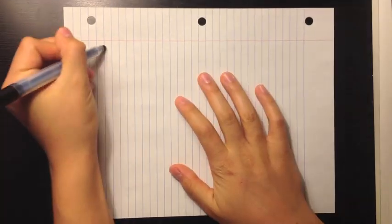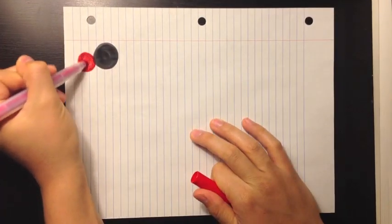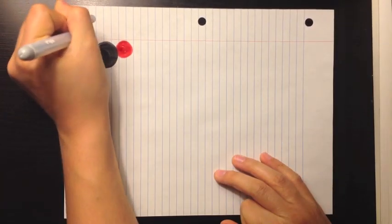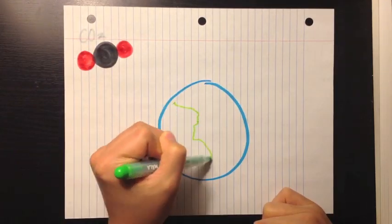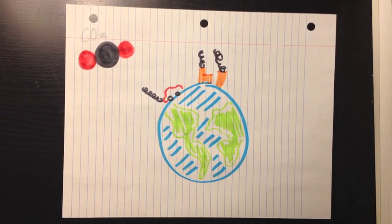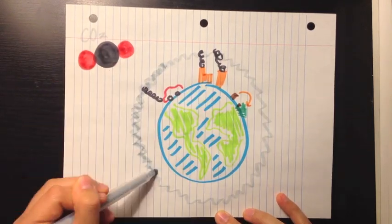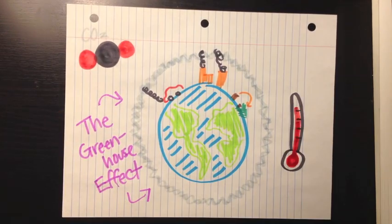At Berkeley, I researched the arch nemesis of the 21st century, carbon dioxide. You've probably already heard about how things humans do, like burning fossil fuels and cutting down trees, changes the earth's climate through something called the greenhouse effect.